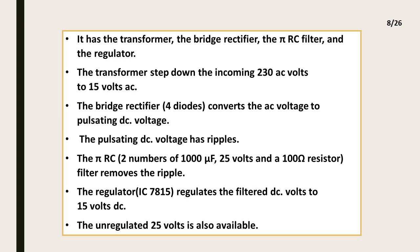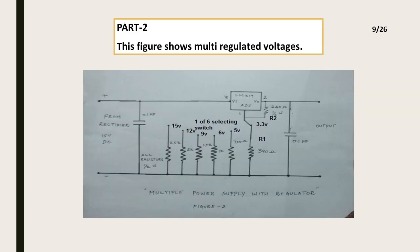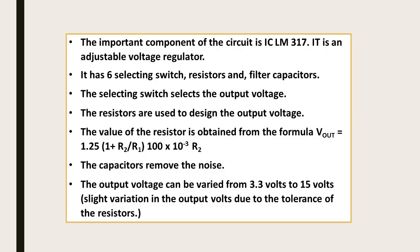The unregulated 25 volts is also available. Part 2: This figure shows multi-regulated voltages. The important component of the circuit is IC LM317, an adjustable voltage regulator. It has six selecting switch resistors and filter capacitors. The selecting switch selects the output voltage. The resistors are used to design the output voltage. The value of the resistor is obtained from the formula: V_out = 1.25 × (1 + R2/R1) + 100×10⁻³ × R2.